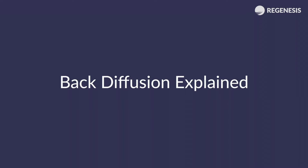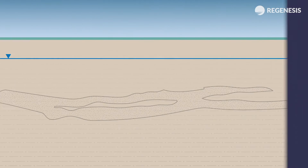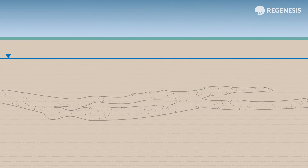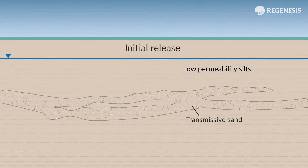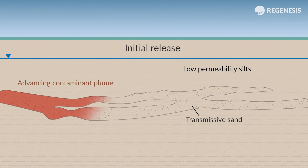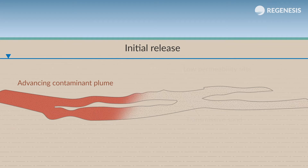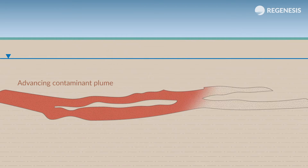Back Diffusion Explained: an introduction to the concept of back diffusion and its effect on achieving remedial targets. An initial release of contaminants may cause subsurface pollution of the groundwater. The movement of the impacted groundwater can spread the contaminant plume through the more permeable mobile porosity in the subsurface.